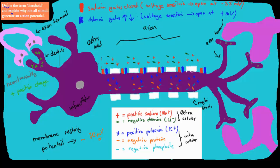Sodium gates allow sodium to either enter or leave. In most cases when they are open, sodium will enter the actual neuron — it will go from the extracellular into the intracellular — but in most cases they are closed. They are actually voltage sensitive, so if the voltage changes these gates will open. At minus 70 millivolts the sodium gates are going to be closed, and they will open up at minus 55 millivolts — that's when they will actually open.